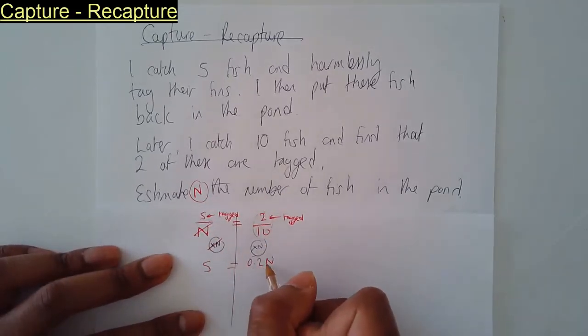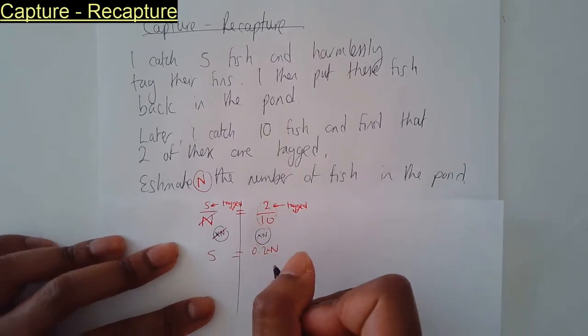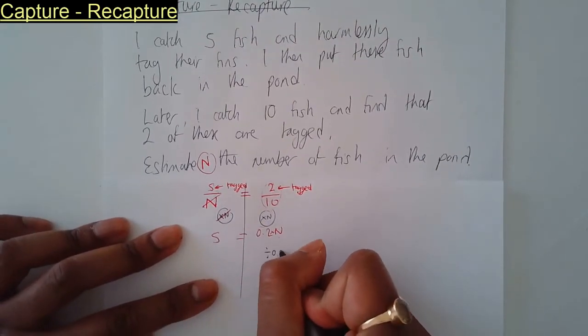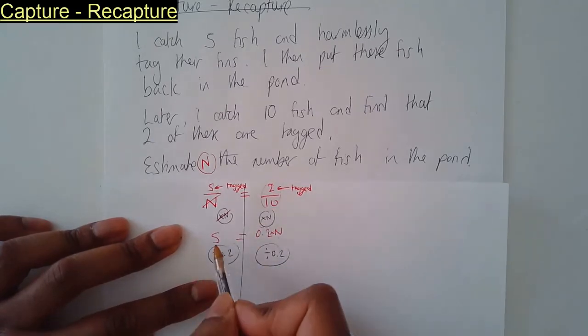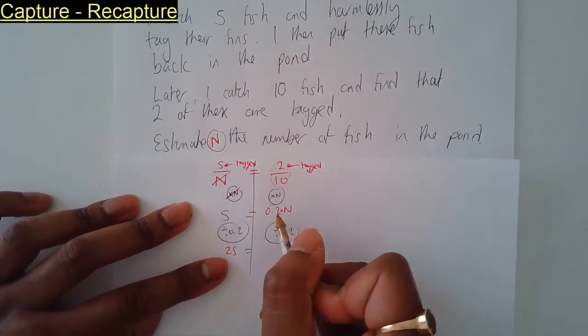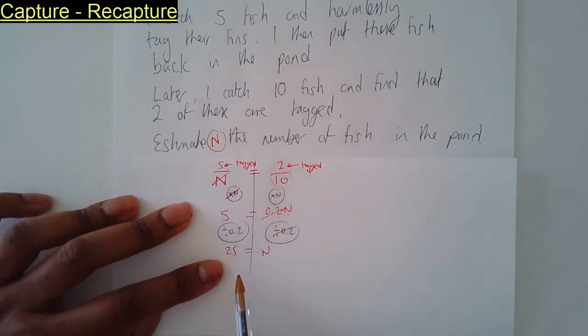0.2 times something to give me 5. To get rid of 0.2, you need to divide by 0.2. Do the same on the other side: 5 divided by 0.2 is 25. And 0.2 is cancelled by 0.2 over here; you're left with N. So the estimate for the number of fish in our pond is 25.